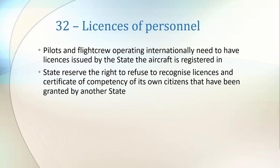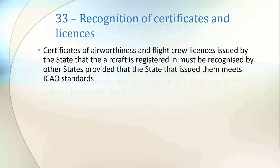States also reserve the right to refuse to recognize licenses and certificates of competency of their own citizens if the licenses were granted by another state. Article 33 ensures that certificates of airworthiness and flight crew licenses are recognized by other states, as long as the issuing state meets ICAO standards.